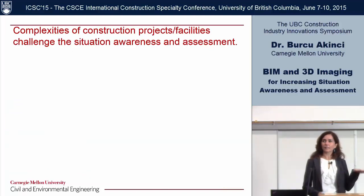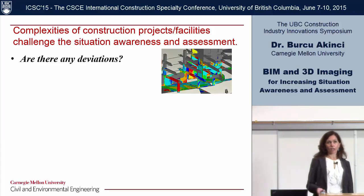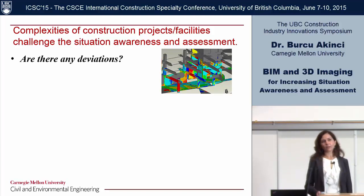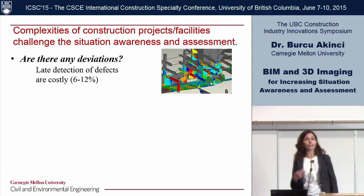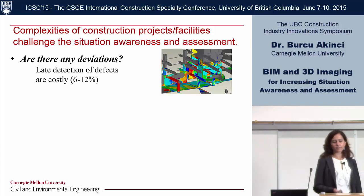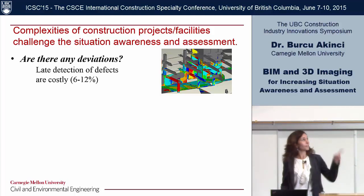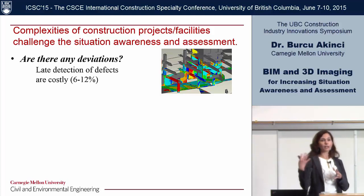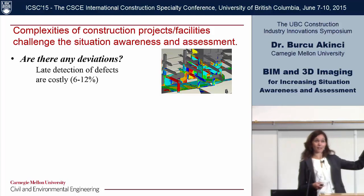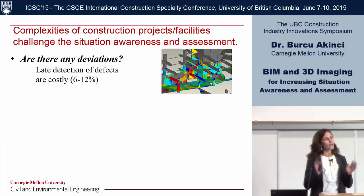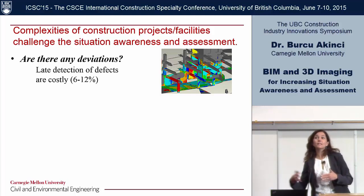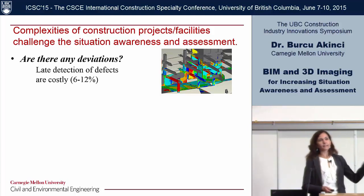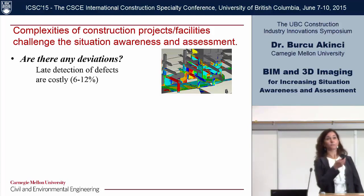Sometimes seemingly easy questions become very challenging when we have complex projects. For example, are there any deviations at my job site? Very simple if we have the information, but if we don't, we end up losing a lot of money and time fixing defects afterwards. The red part in this picture is deviations observed by collecting point cloud data and mapping that with the BIM — an early study about 10 years ago. Not only was there an error in a column, but since we missed it, we kept on building until it was too late. That's the challenge, and we want situation awareness to eliminate these issues.